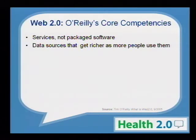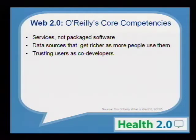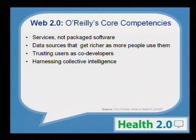Data sources that get richer as more people use them: when we think of Wikipedia, if it were just one person writing an entry it means one thing, but it's an intelligent resource that gets better as more people use it. Trusting users as co-developers means it's not just about producing a product and putting it out there — your customers and users can actually be part of shaping your product and service. Harnessing collective intelligence: we know that we like to hear what lots of people think, like trip-advisor-type sites.